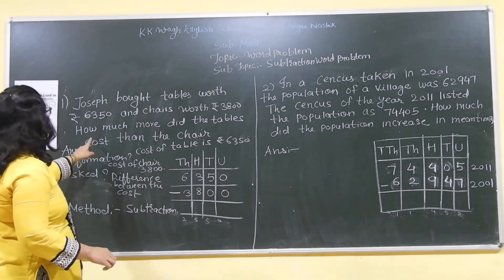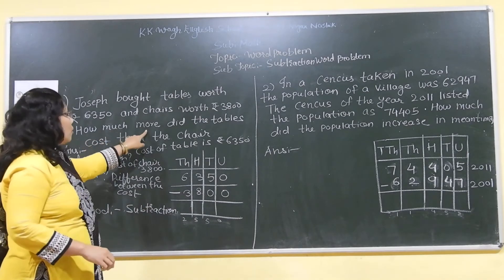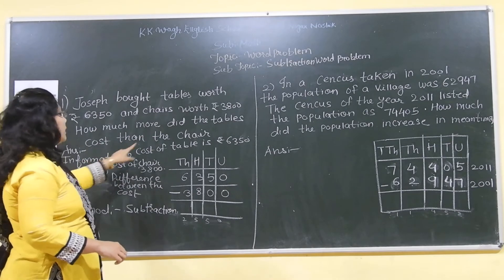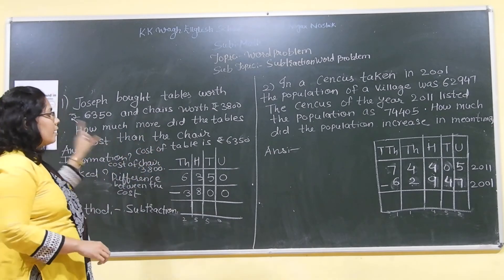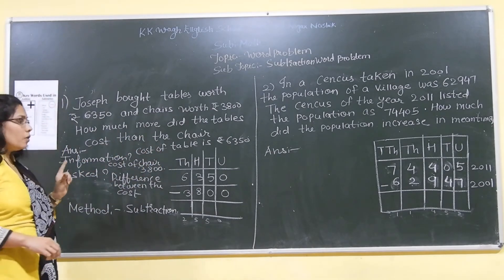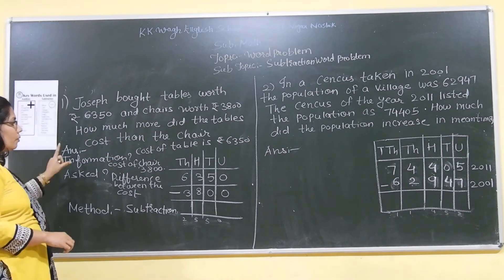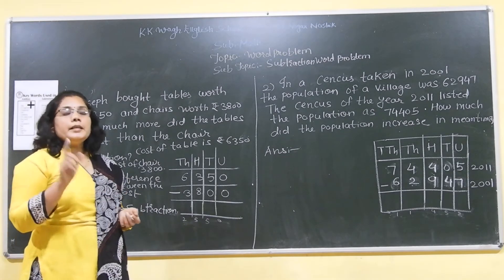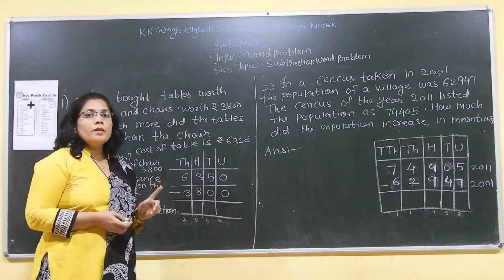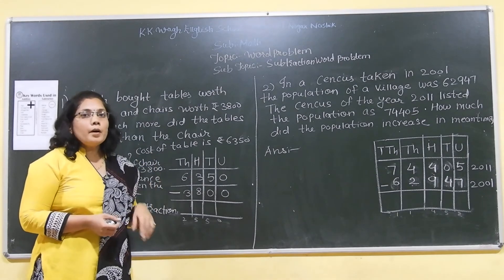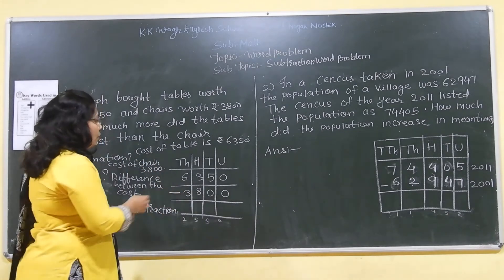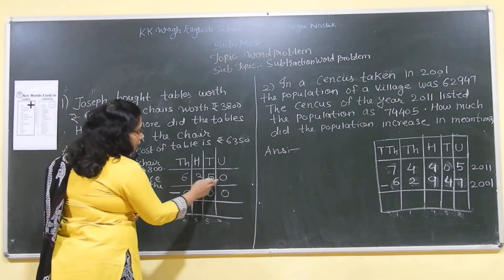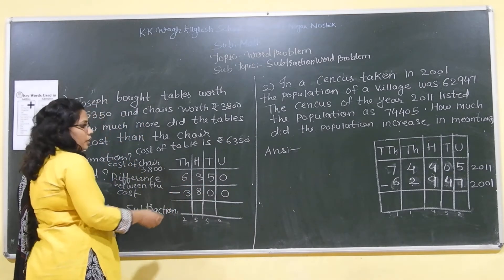You see here, how much more did the tables than the chair? Means we have to subtract one quantity from the other quantity or one number from the other number. So, we will place, always remember, in subtraction, we always subtract smaller number from bigger number. So, we see here 6350 minus 3800.